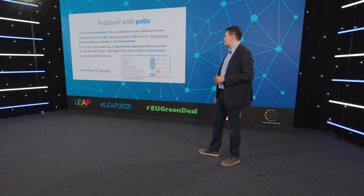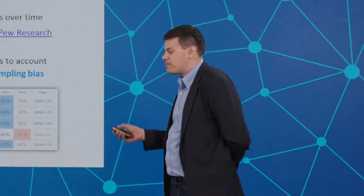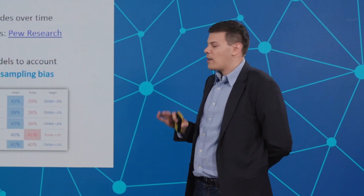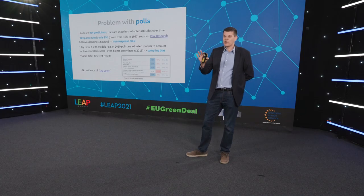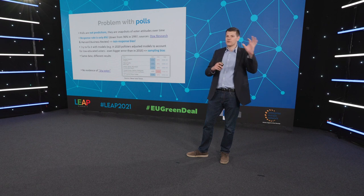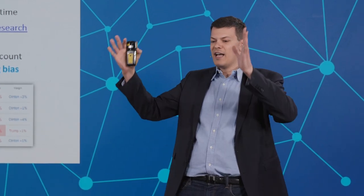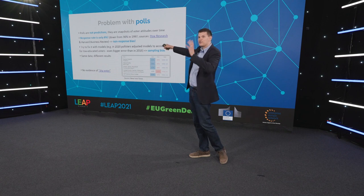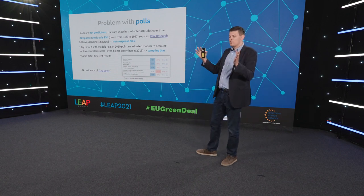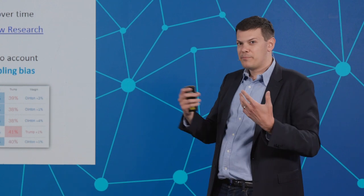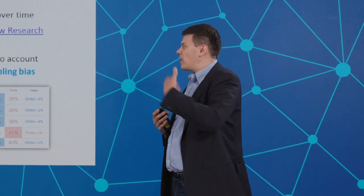However, polls do have a bad rep, especially given the latest errors over the past 5-10 years. There are two basic problems. The first one is that the response rate of polls is very, very low — it's down to only 6%. This is down from 36% in 1997. What this means: if you want a sample of 600 people, you need to call 10,000 people in order to get your 600 responses. You're missing a lot of responses from those 9,400 people who are not responding — that's a non-response bias. Back in 1997, you only needed to call 2,000 people to get your sample. The pollsters are aware of this and they're trying to fix it with models.